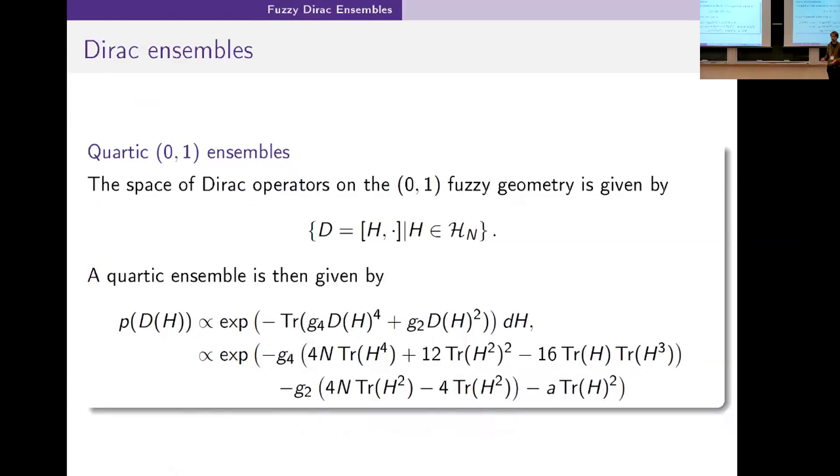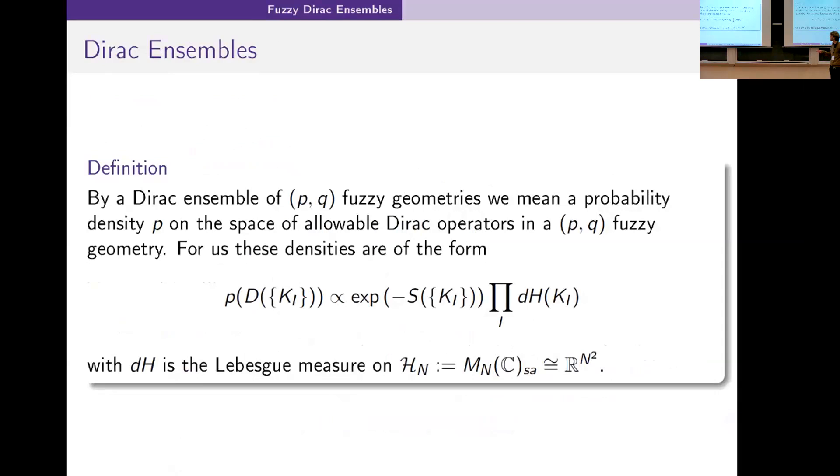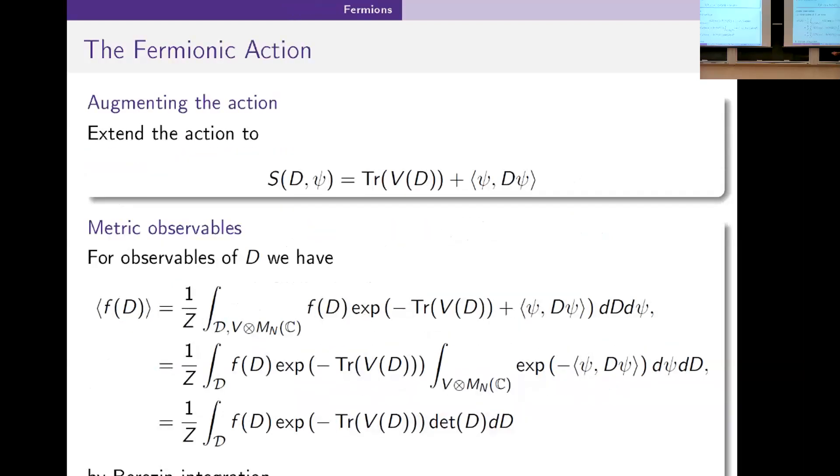One of the things we wanted to do for these models was we wanted to include a fermionic action because right now our action is entirely in terms of D and we wanted to add in this fermionic part of the spectral action.